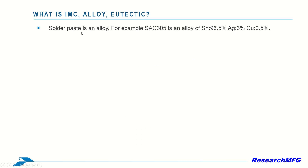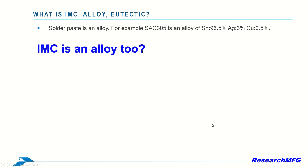Alloy is a term we encounter often in PCB manufacturing. For instance, SAC305 is an alloy comprising 96.5% tin, 3% silver, and 0.5% copper. But does IMC also fall under the category of an alloy?